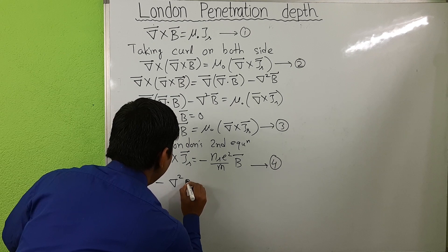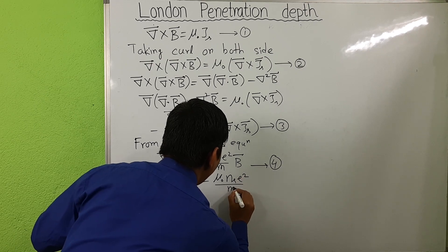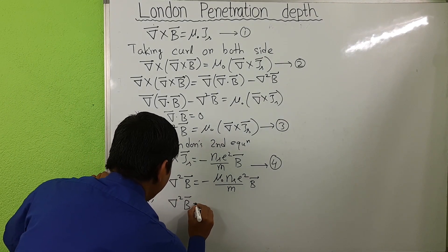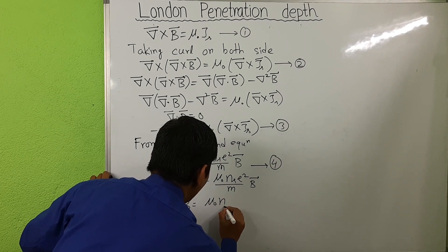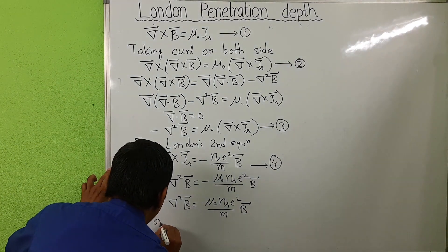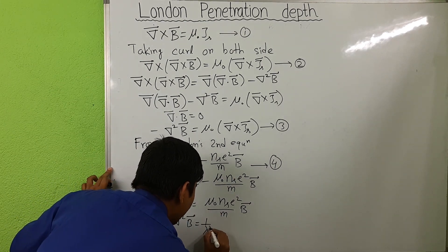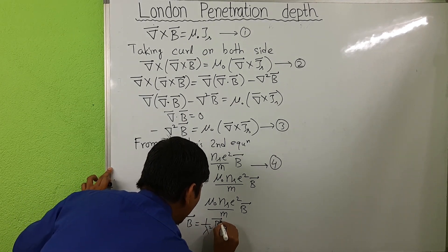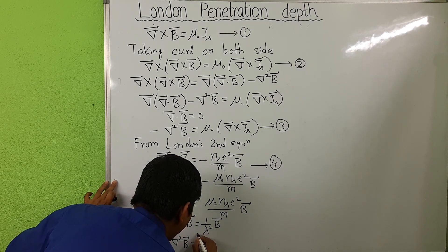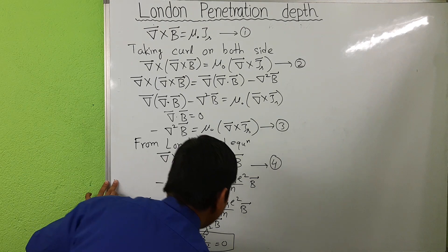Combining equations three and four, we get: minus grad-squared B equals minus mu-zero times n_s times e-squared divided by m, times B. This simplifies to grad-squared B equals (mu-zero times n_s times e-squared divided by m) times B, which can be written as grad-squared B equals (1 over lambda-squared) times B, or equivalently grad-squared B minus B over lambda-squared equals zero. Let this be equation five.